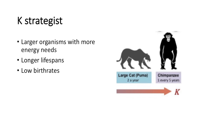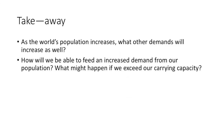Because of this investment, their offspring are more likely to succeed into adulthood. Humans would follow in the steps of the K-strategist, though you can see we had an exponential growth period in our population. As the human population continues to increase, what other demands on resources will increase as well?